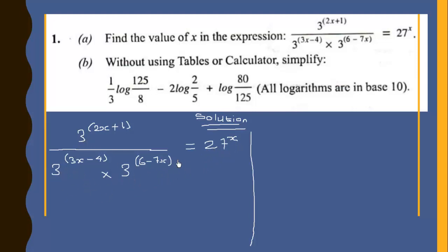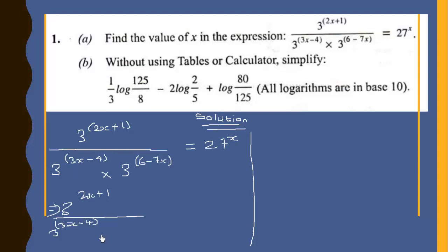All these terms are already in base 3. We express 27 as a base 3 number. So we have 3 raised to the power 2x plus 1, all over 3 to the power 3x minus 4, times 3 to the power 6 minus 7x, equal to 3 to the power 3, which gives us 27, and there is already an x over there.